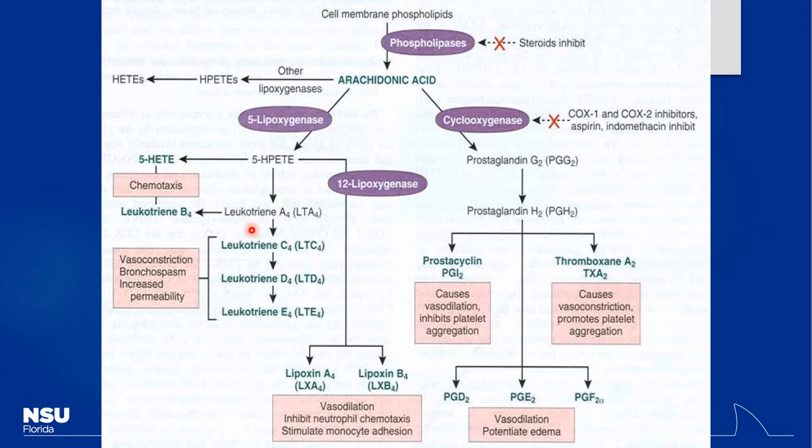That lipoxygenase pathway is going to be less important for our purposes here. At the top of the pyramid are our corticosteroids, which actually prevent phospholipases from working in the first place, decreasing transcription of inflammatory genes. Very, very powerful — but also a lot of side effects associated with that.